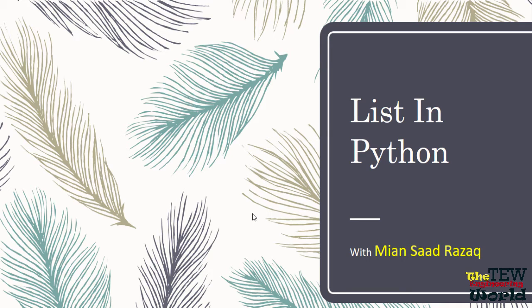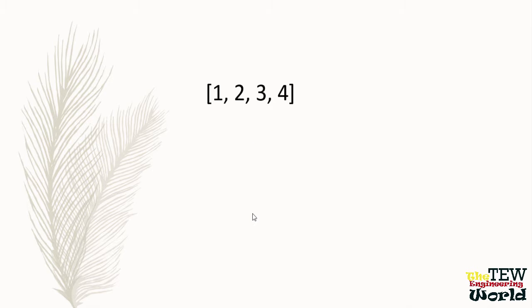In this video, I am going to give you a quick review of Python list. You may be already familiar with the concept of array in other languages such as Java, but in Python, the equivalent type that is most commonly used is called list. Just like an array, a list is basically a collection of elements, whatever their types might be.